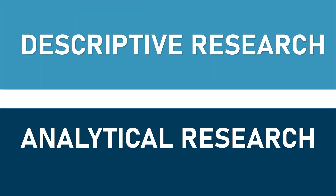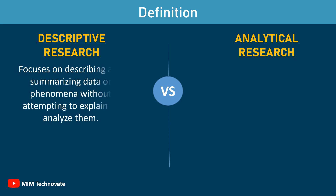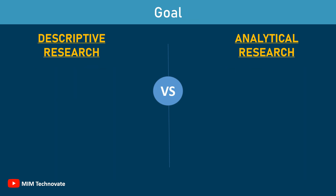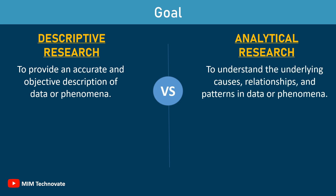Differences between Descriptive Research and Analytical Research. Definition: Descriptive Research focuses on describing and summarizing data or phenomena without attempting to explain or analyze them. Analytical Research focuses on breaking down complex problems into smaller components and analyzing them individually. Goal: The goal of Descriptive Research is to provide an accurate and objective description of data or phenomena, while the goal of Analytical Research is to understand the underlying causes, relationships, and patterns in data or phenomena.